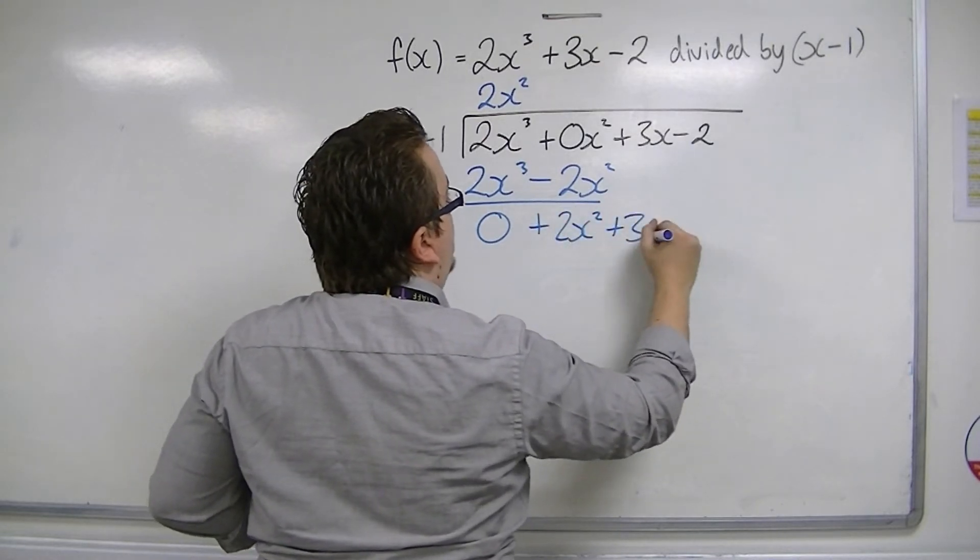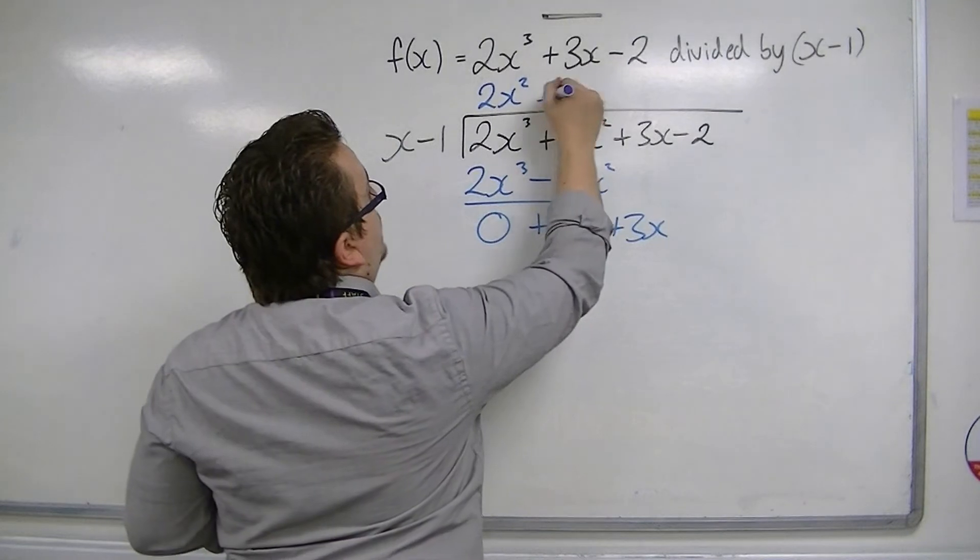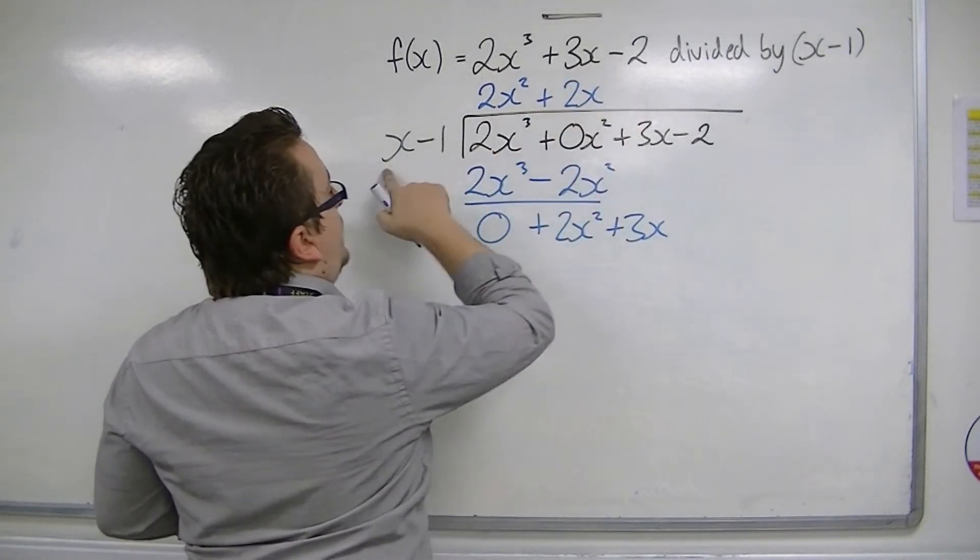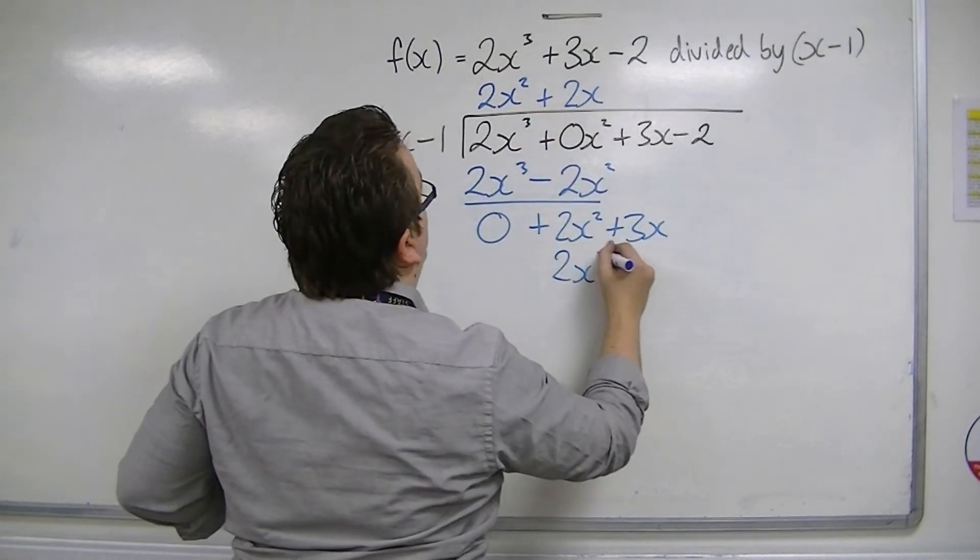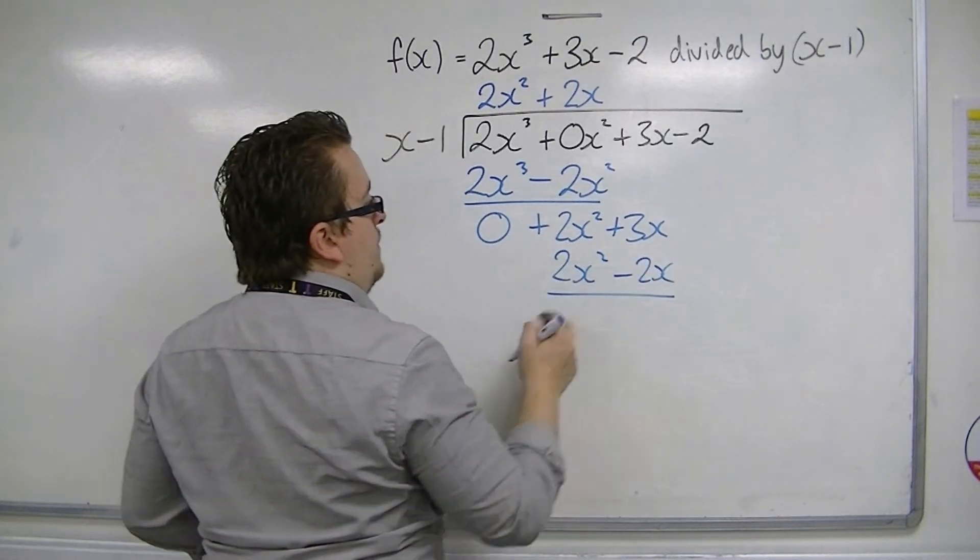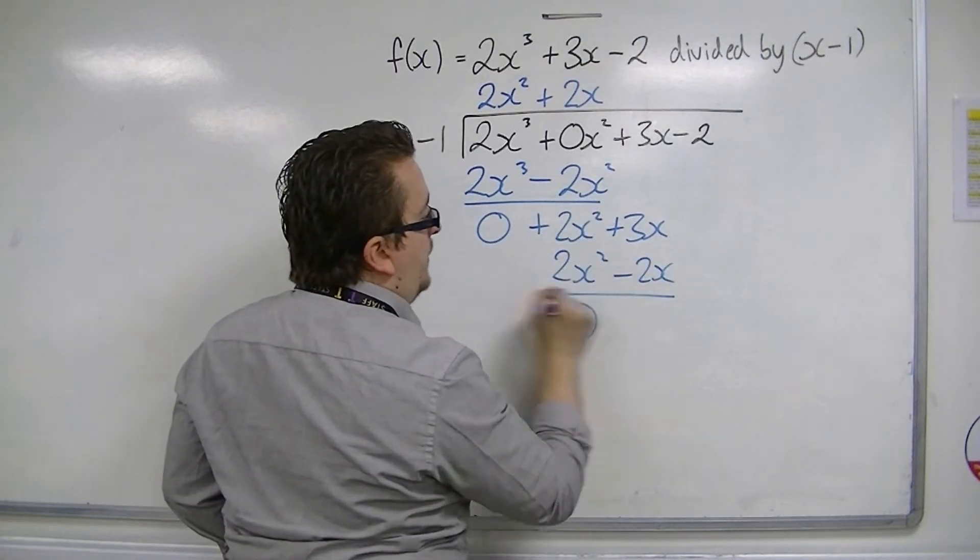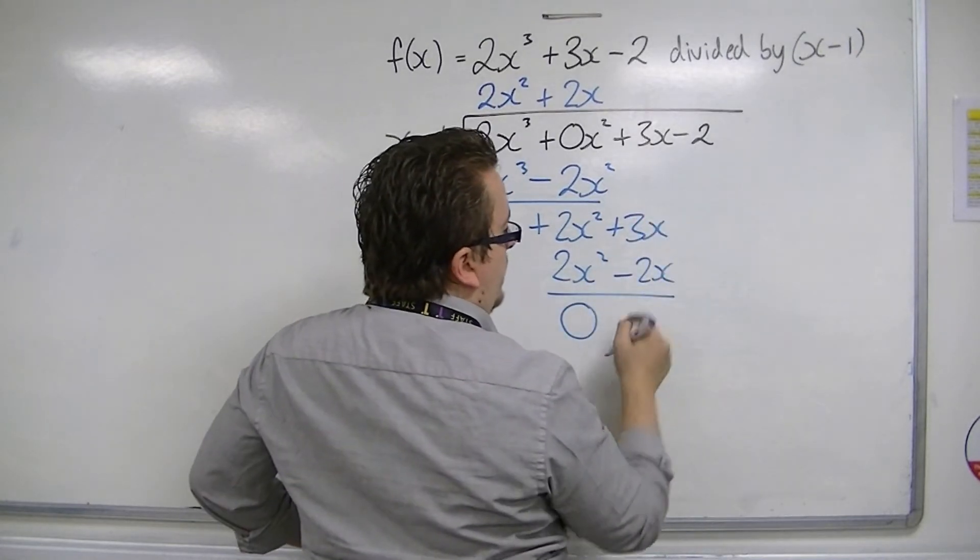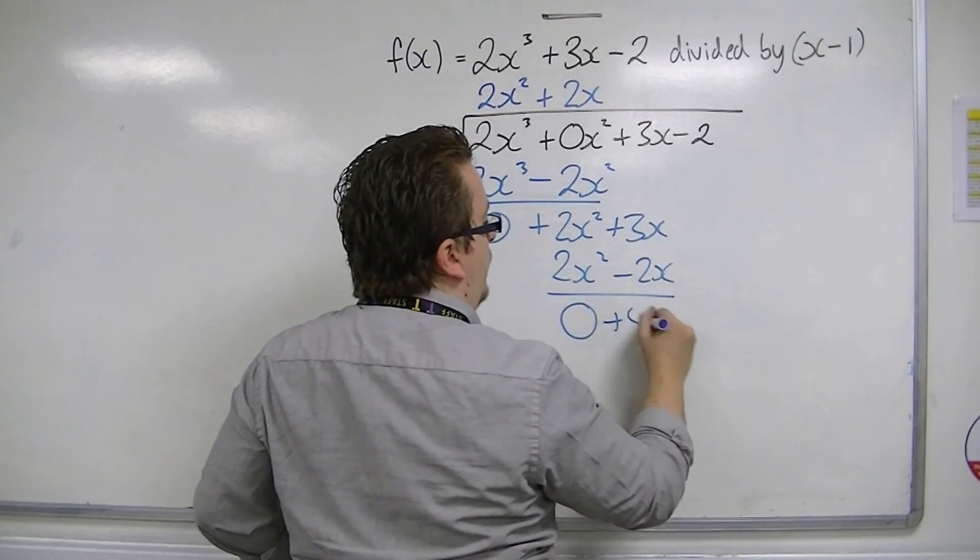Bring the 3x down. x is into 2x squared, go 2x. 2x times these two terms, so 2x squared take away 2x. Perform a subtraction. 2x squared take away 2x squared is 0. 3x take away minus 2x is plus 5x.